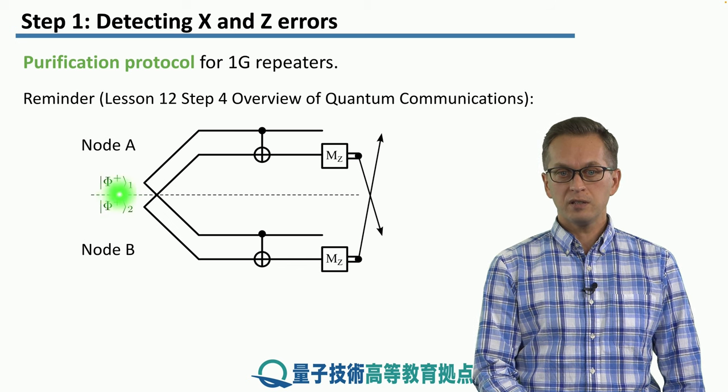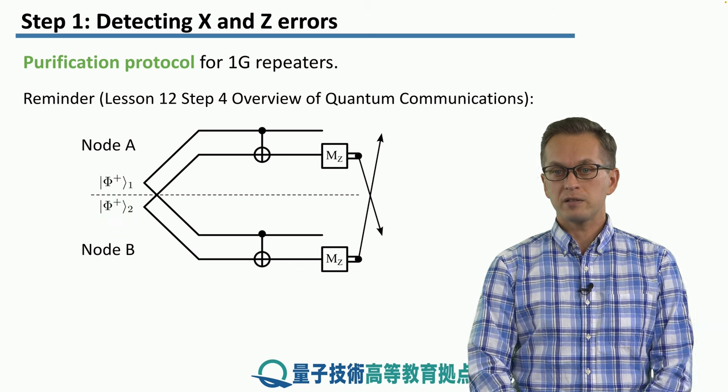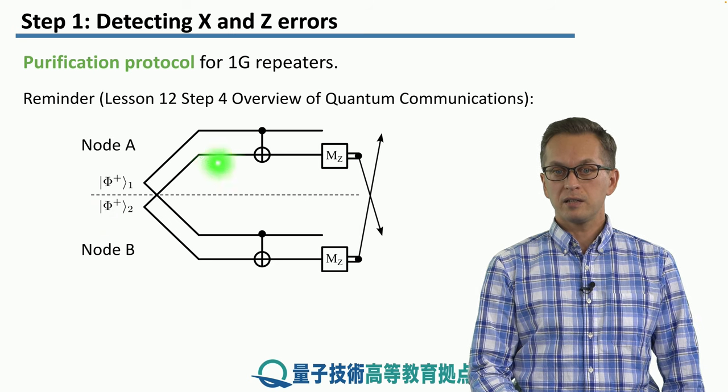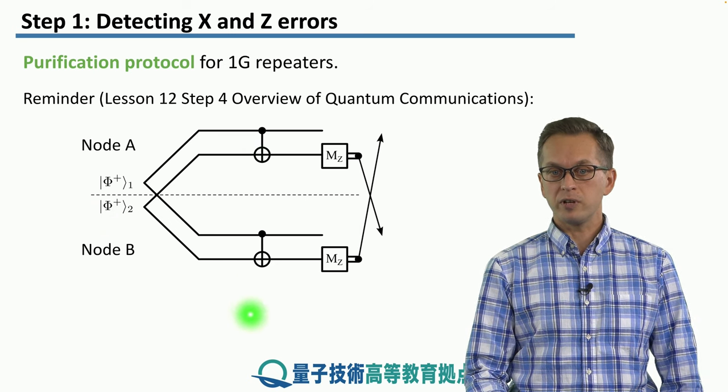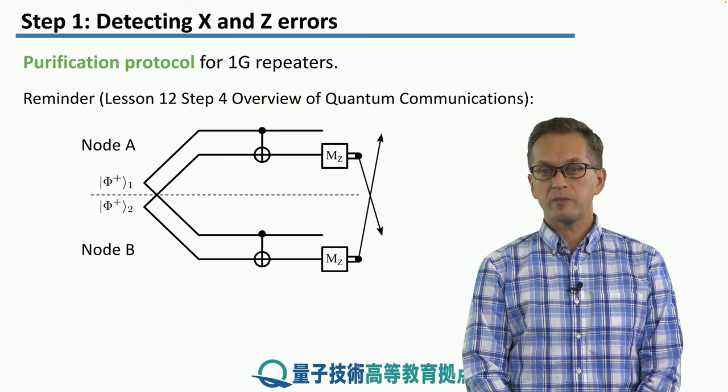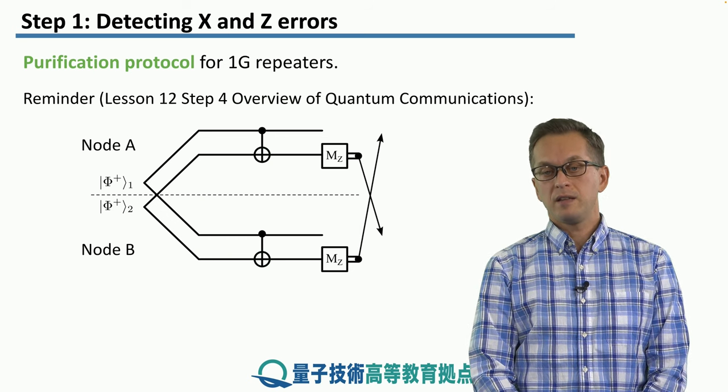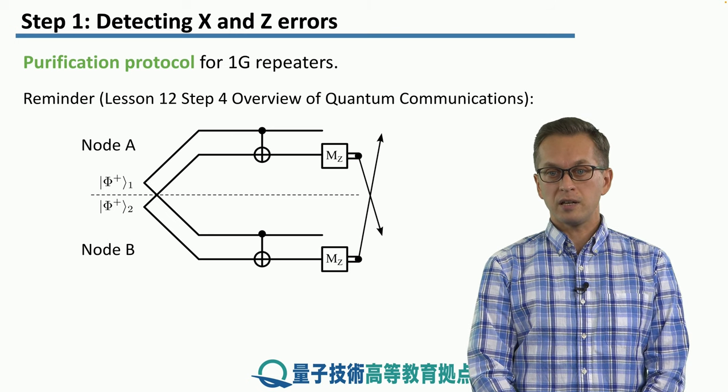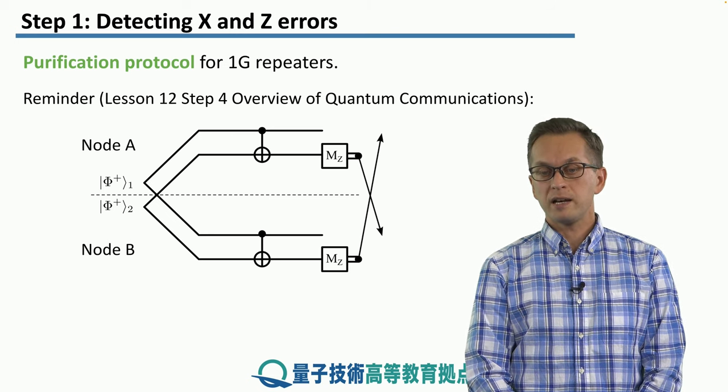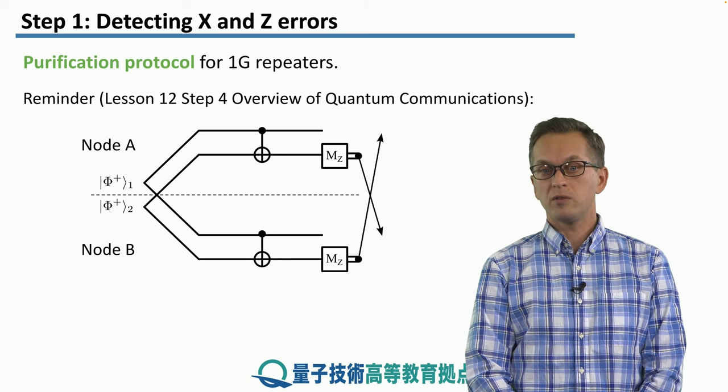Node A and Node B distribute two pairs of a Bell pair. Then they apply CNOT operations on the qubits that they possess and measure the second pair in the Z basis. Then they exchange the classical outcomes of this measurement between each other and they decide whether to keep pair one or not.